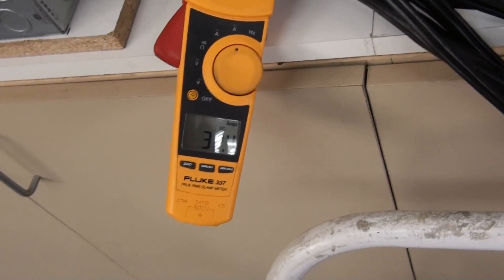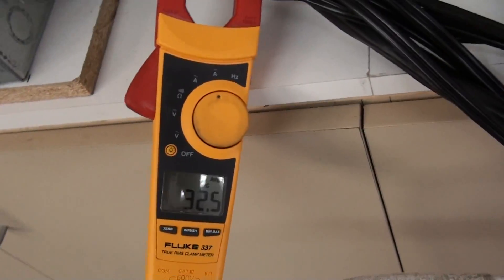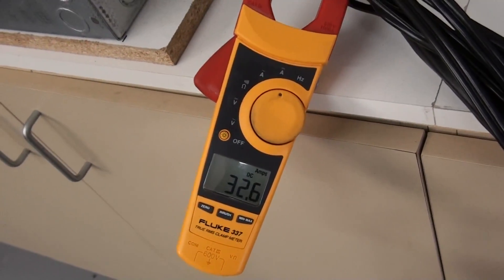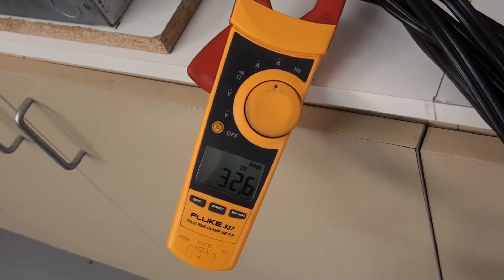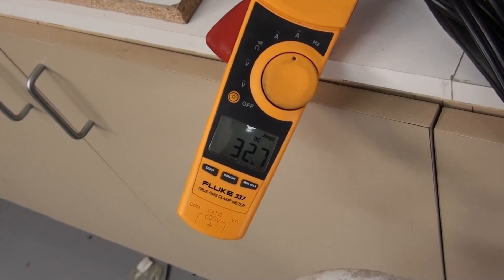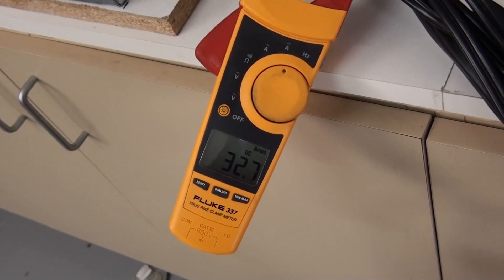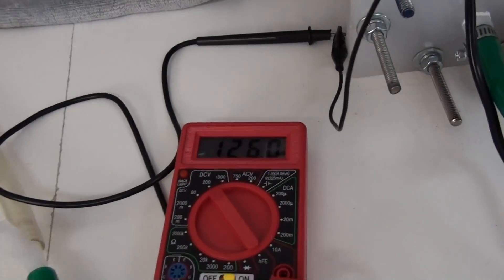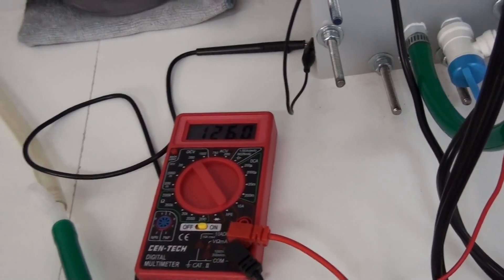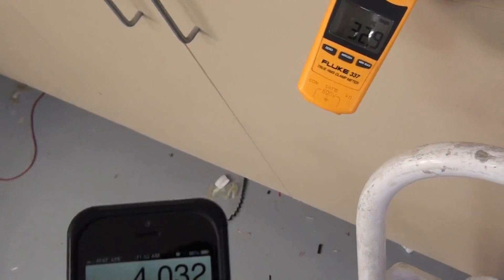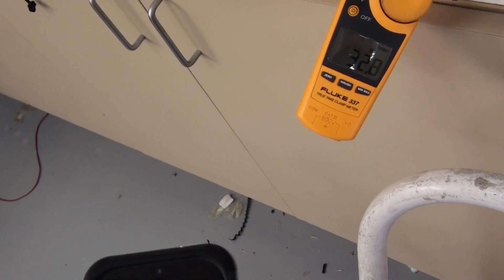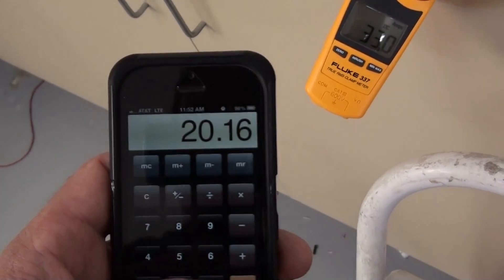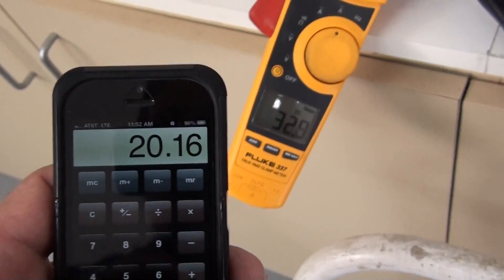We just take the amperage. Normally it's about 200 watts per liter. We'll just estimate here. We'll go 32 amps times 126 volts. Gives you 4,032 watts. And we divide that by 200. And it gives you about 20 liters a minute. There we go.